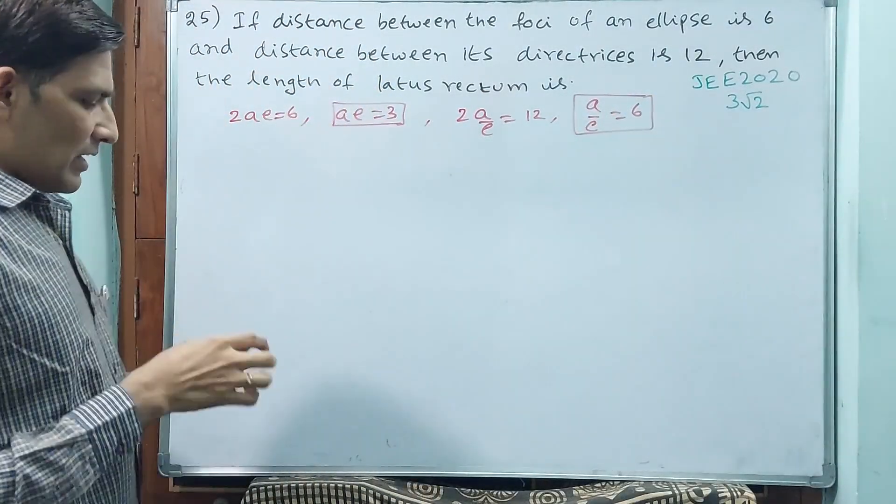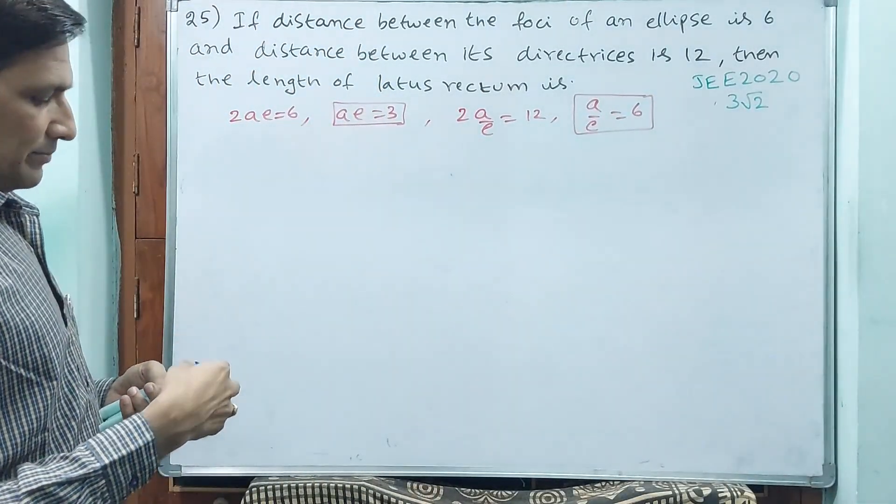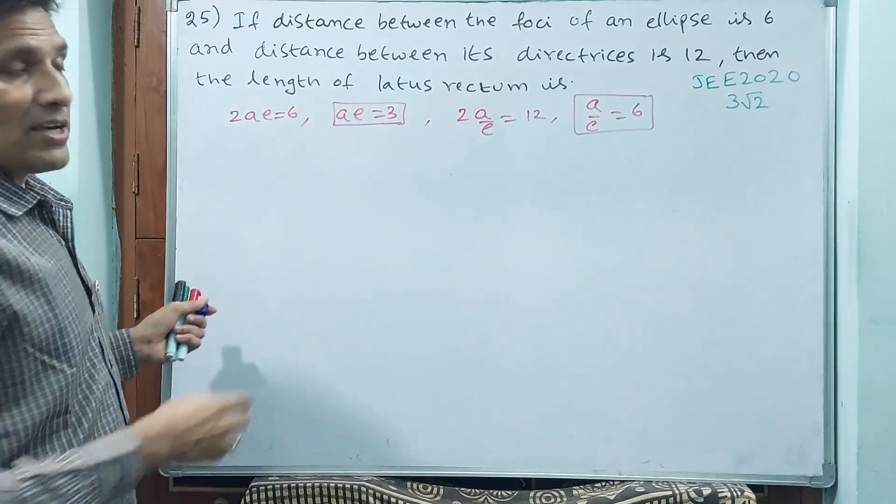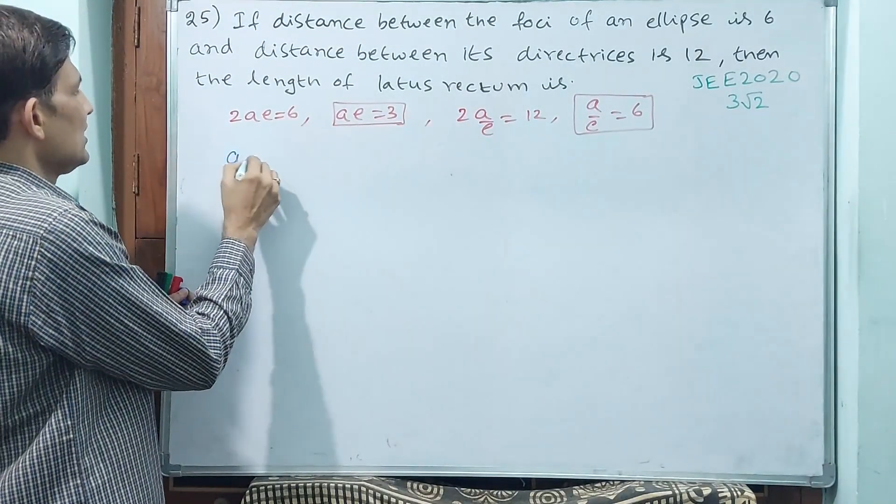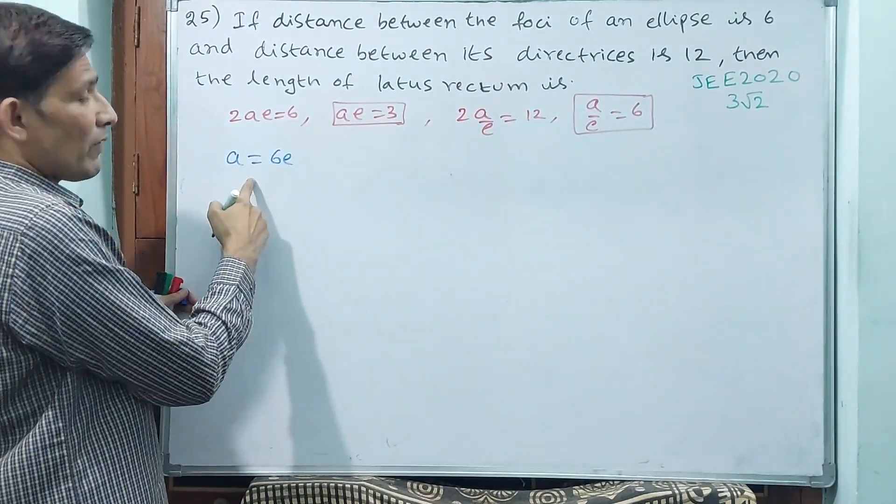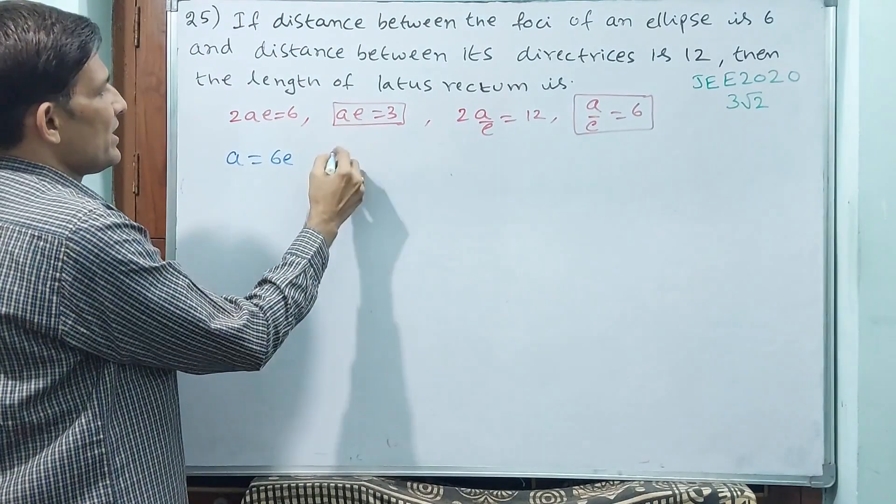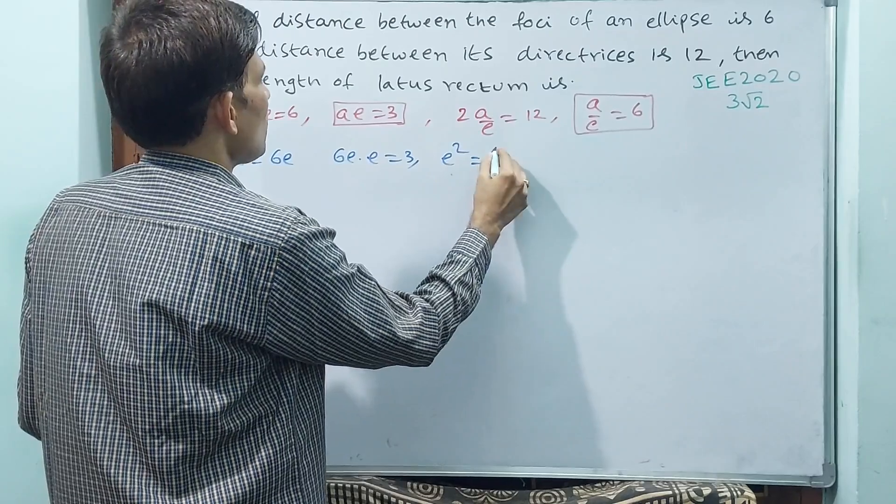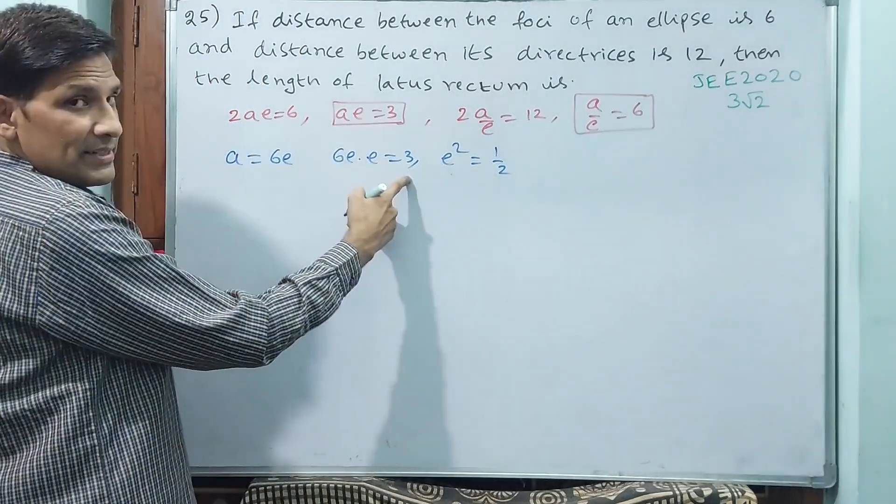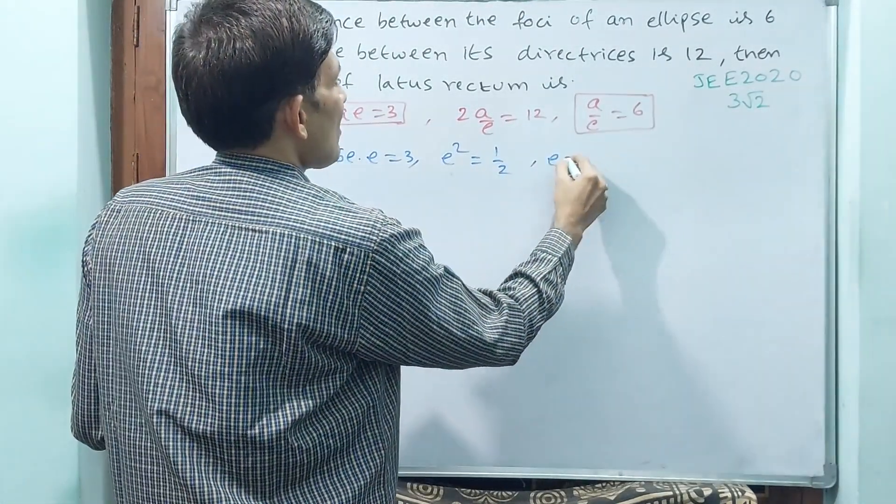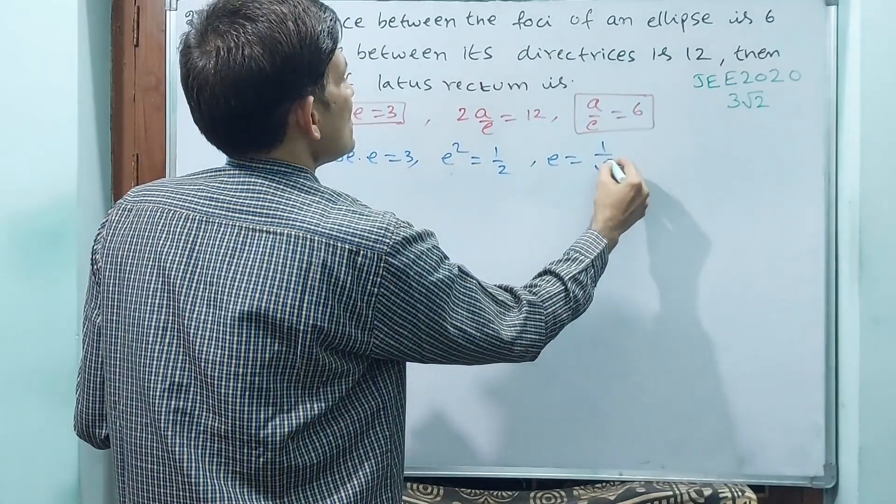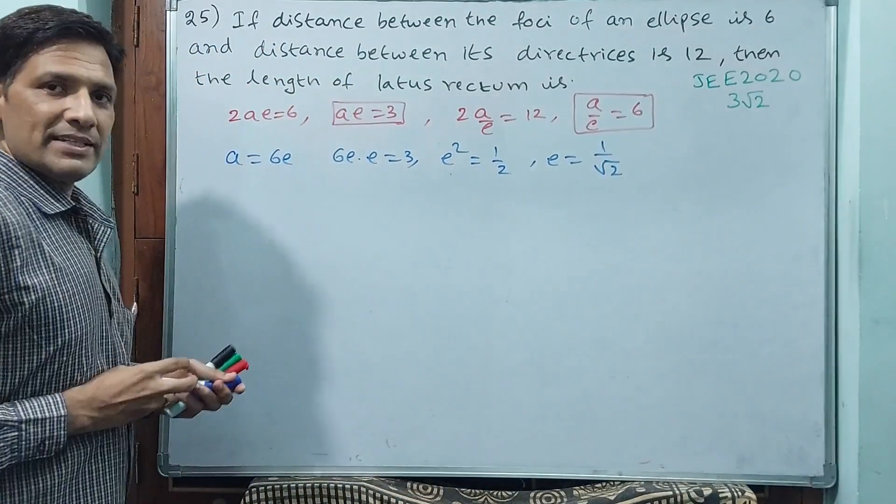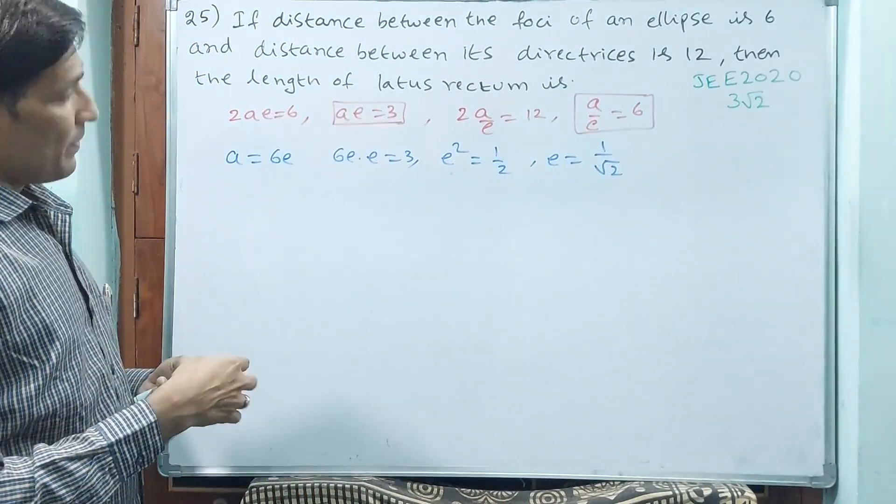See, if A/E is equal to 6, then how we are going to solve? A is equal to 6E. If A is equal to 6E, you substitute here. 6E into E is equal to 3, or E² is equal to 1/2, which is 3/6. What is E? 1 by root 2. E is 1 by root 2.